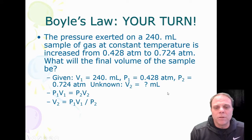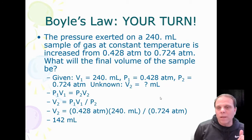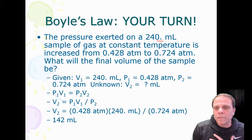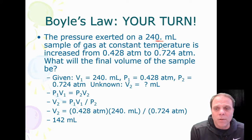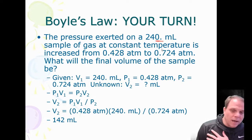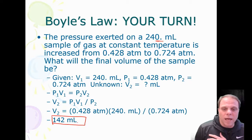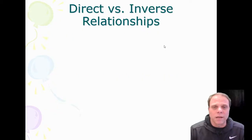We write our formula P1V1 = P2V2, then manipulate it to solve for V2. Plugging everything in and showing units, we get 142 mL. We can keep three sig figs because the decimal on the zero indicates we actually measured that zero. So our final answer is 142 mL — which is smaller than 240, and that makes sense for an inverse relationship where increasing pressure decreases volume.